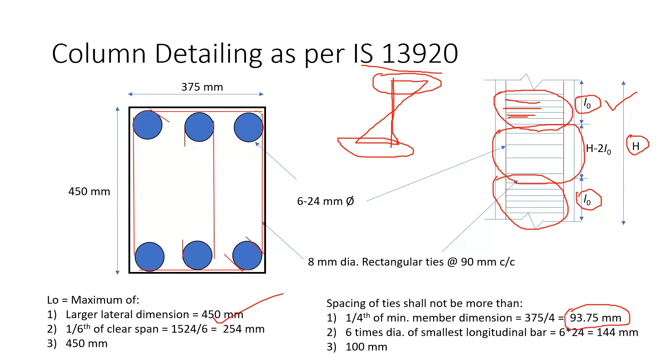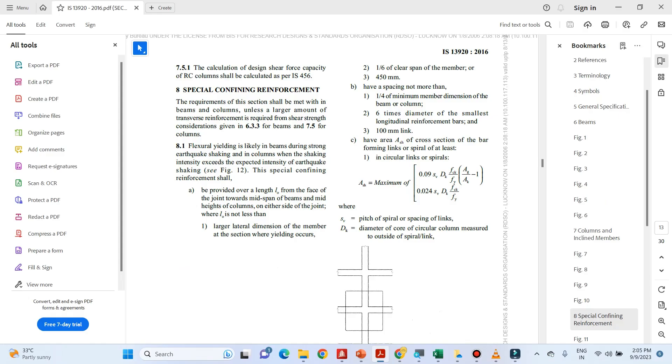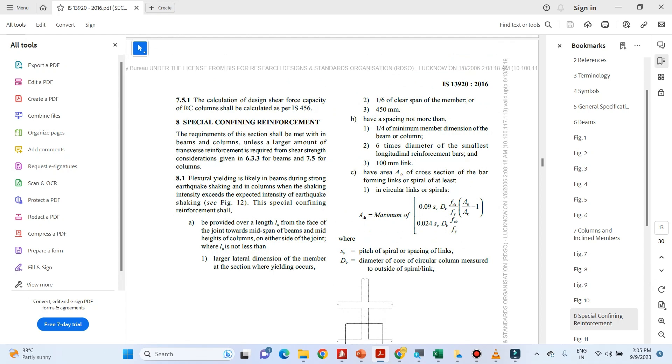So what we will do is we will provide 8 mm dia ties at 90 mm center to center. Whatever the codal provisions that I have discussed for the special confining reinforcement are given in this clause 8 of IS 13920, 2016.